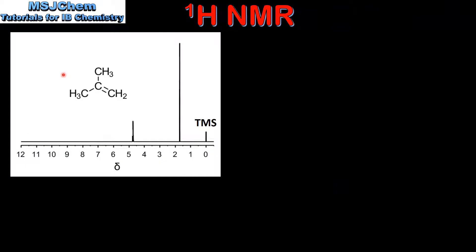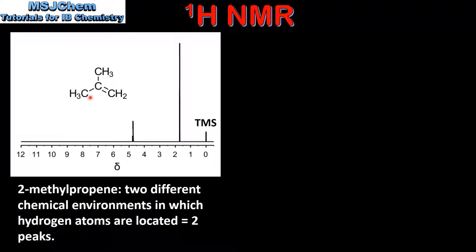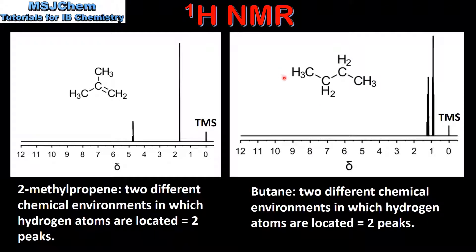Next we look at the NMR spectrum for 2-methylpropene. The hydrogen atoms in the two CH3 groups are in the same chemical environment. The two hydrogen atoms in the CH2 group are in a different chemical environment. So in 2-methylpropene we have two different chemical environments in which hydrogen atoms are located, which gives us two peaks on the NMR spectrum.